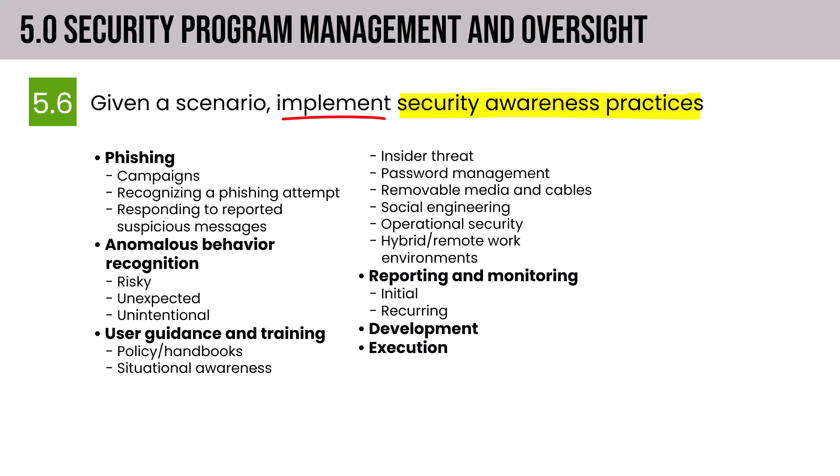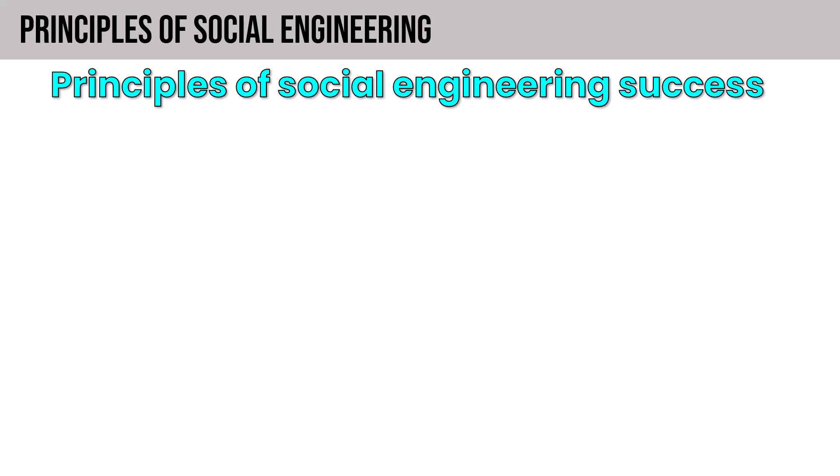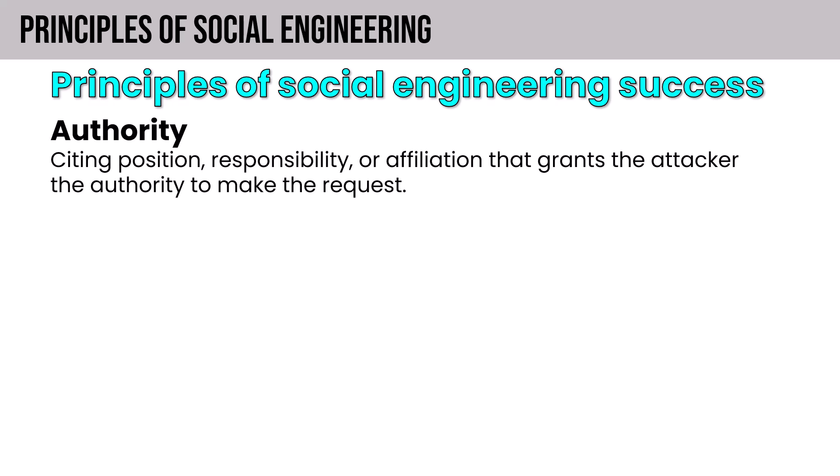Before digging into the syllabus, we'll cover some foundational material around social engineering. Helping users understand the principles of social engineering lies at the core of teaching them to make better decisions to protect the organization from threat. There are six or seven principles depending on who you ask — we'll go through seven. The first is authority: an attacker citing position, responsibility, or affiliation that grants them authority to make a request, whether impersonating a third-party or someone within the organization.